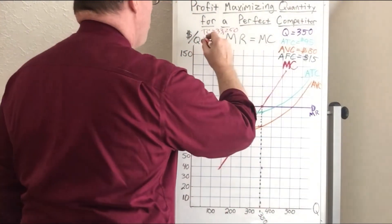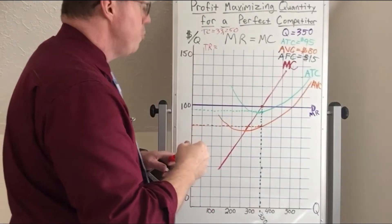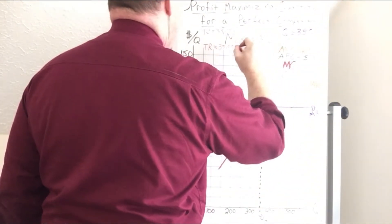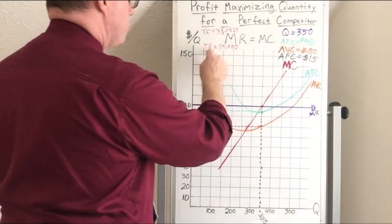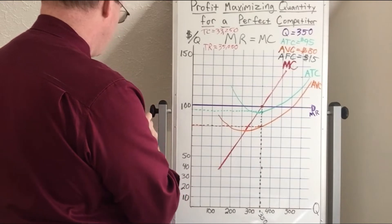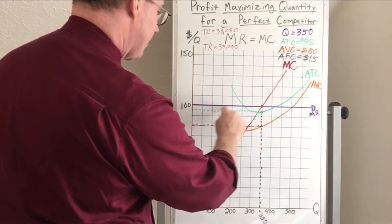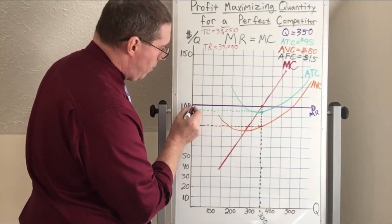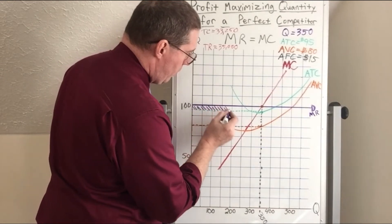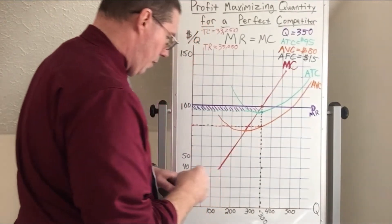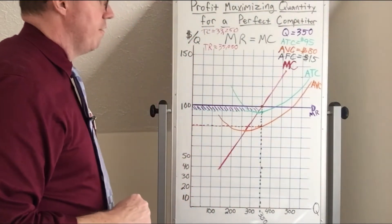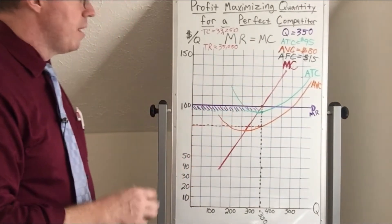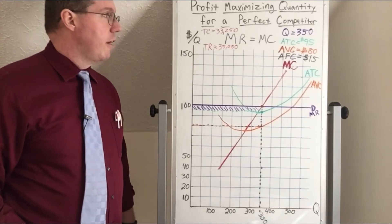To identify the company's total revenue, we do price times quantity: $100 times 350 equals $35,000. To identify the profit, we do total revenue minus total cost: $35,000 minus $33,250. This company is earning a profit — this rectangle right here, this shaded area, is our profit. In this particular case, our profit is $1,750. This perfect competitor, given that they are price takers and given their cost structure, the best they can do is earn $1,750 in profit.